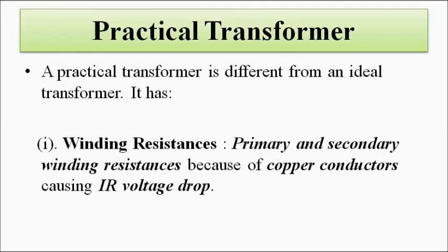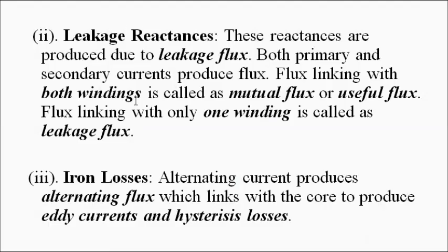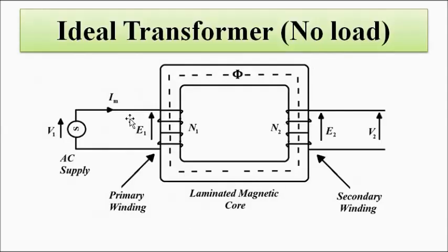In a practical transformer, both the primary and secondary windings have resistance values associated with them. The primary and secondary windings can be visualized as a simple RL circuit — they have some amount of resistance and inductance. In an ideal transformer it is only inductance with no resistance, but in a practical transformer it is an RL combination. The leakage reactances are produced because of the leakage flux.